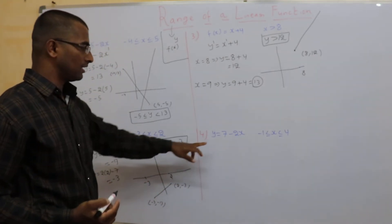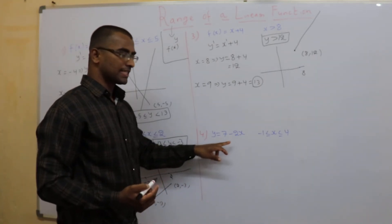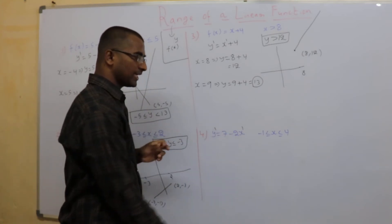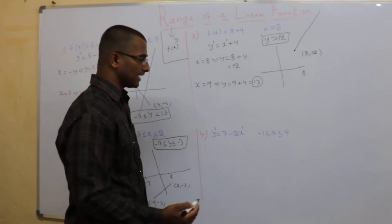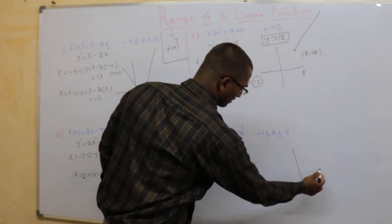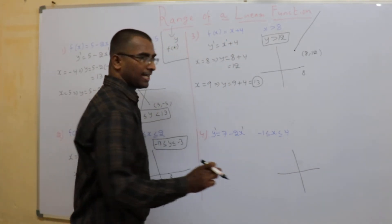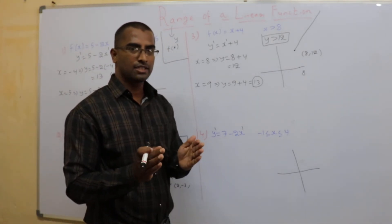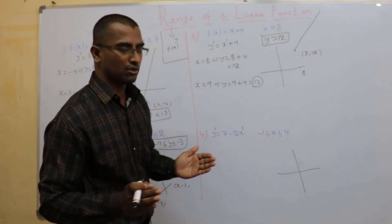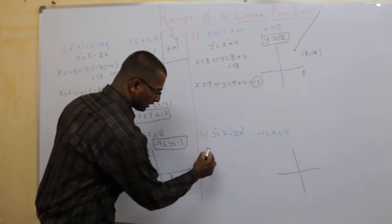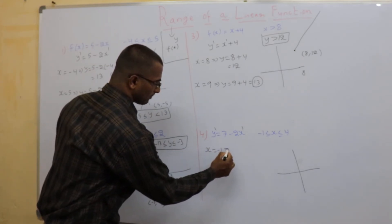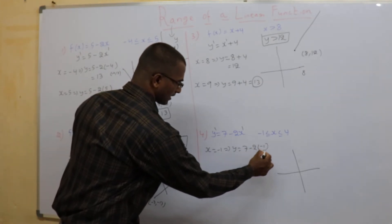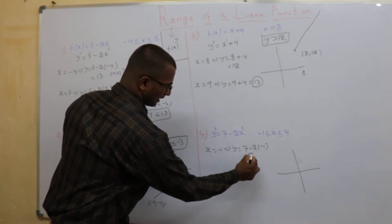Next example: y = 7 minus 2x. The power on x and y is 1, so it's a linear equation and you get a straight line. It is restricted between two values of x. For these two values of x, y is restricted between which two values? To find out, substitute. When x = minus 1, the result comes to 9.